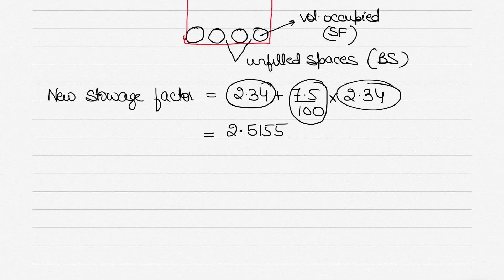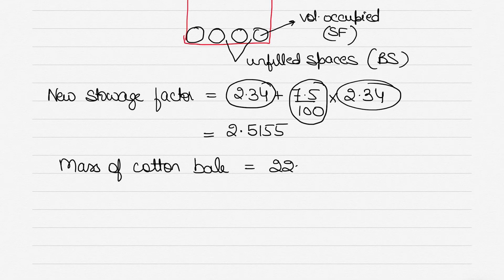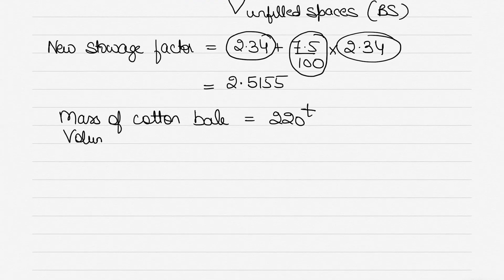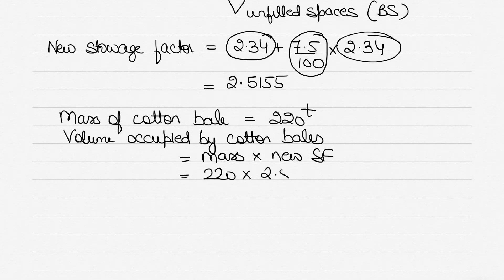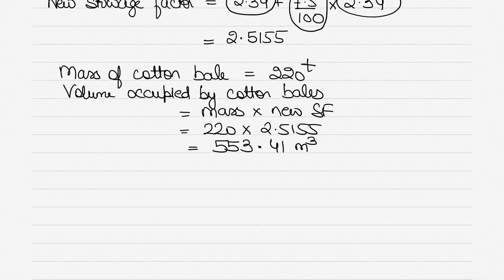The mass of cotton bales given is 220 tons. Volume occupied by cotton bales = mass × new stowage factor = 220 × 2.5155 = 553.41 cubic metres. Mass multiplied by stowage factor gives you the volume occupied by the cargo.